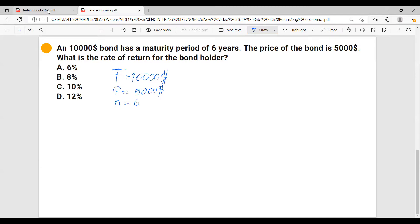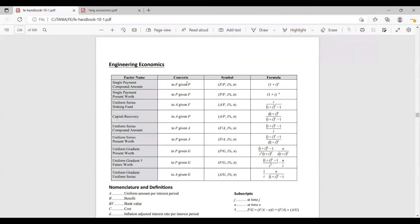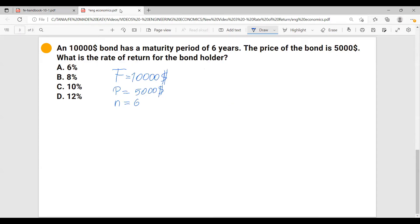So let's see what are we going to choose. We can either convert to future given present or to present given future. Let's convert to future given present. So we'll convert to future given present. And we have interest rate, which we have to calculate. And the timeline is six years.